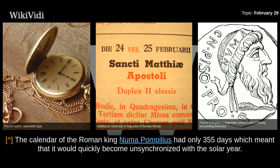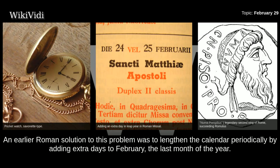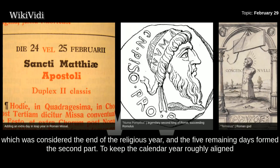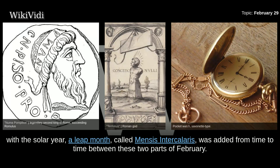The calendar of the Roman king Numa Pompilius had only 355 days, which meant that it would quickly become unsynchronized with the solar year. An earlier Roman solution to this problem was to lengthen the calendar periodically by adding extra days to February, the last month of the year. February consisted of two parts, each with an odd number of days. The first part ended with the Terminalia on the 23rd, which was considered the end of the religious year, and the five remaining days formed the second part.